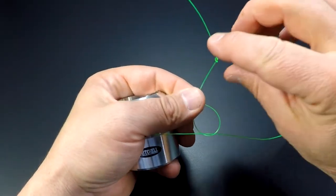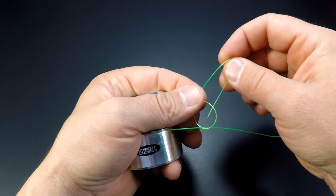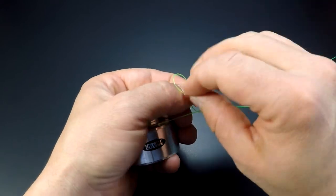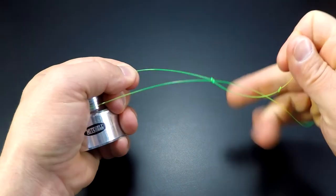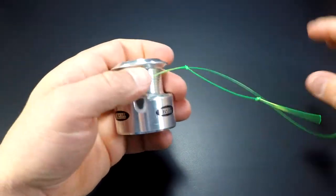The main line should move freely through the loop. Now tie a second overhand knot using the loop you made around the main line and tighten it down.